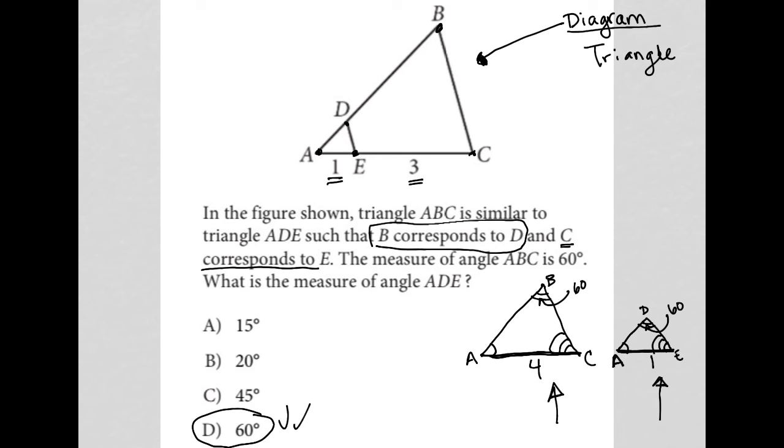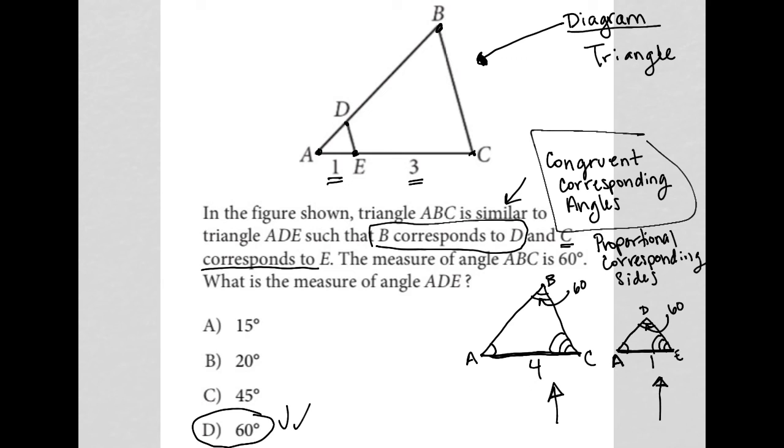So those are the angles that we should be comparing to each other. So the definition of similar triangles, again, is that you have congruent corresponding angles. And you have proportional corresponding sides, which didn't become important for this question. But this is extremely important. So we know B is 60. That means D is 60. So the answer choice, or the answer is choice D for this question.